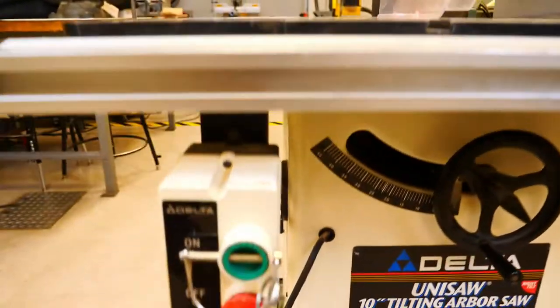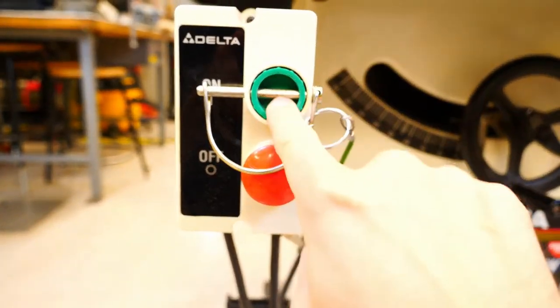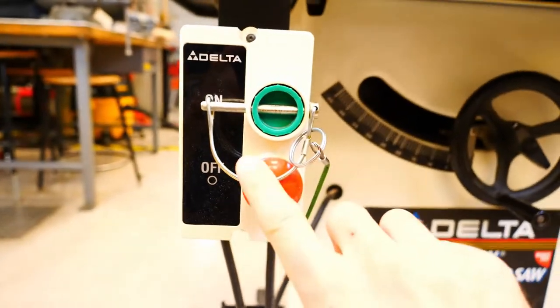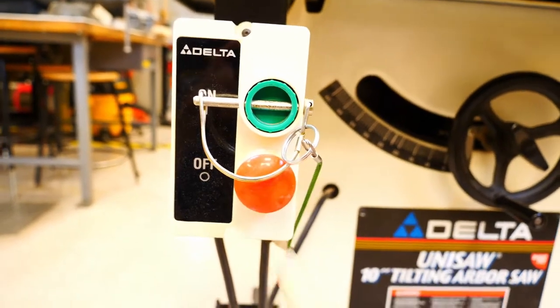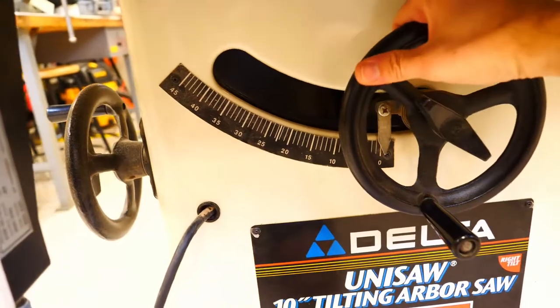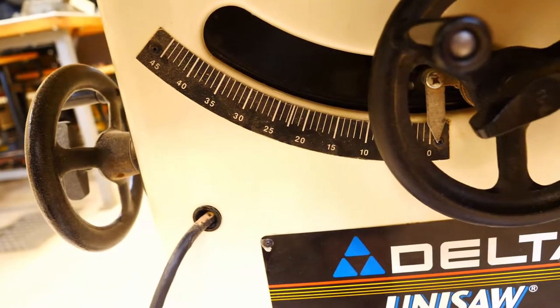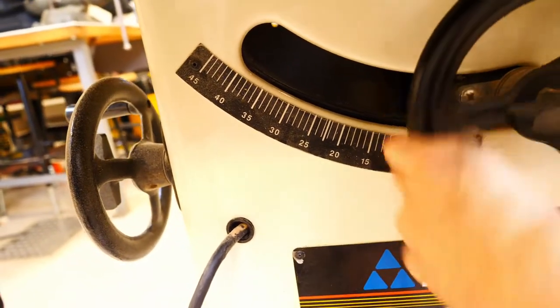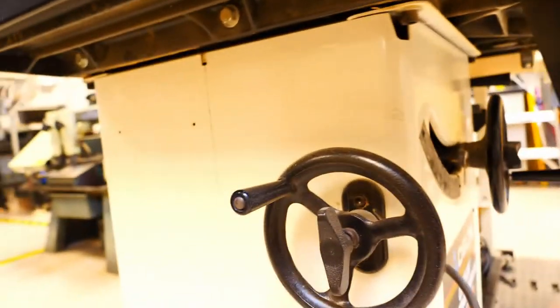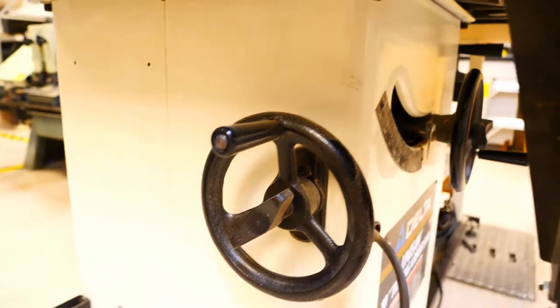Down below we have our on-off switch with our safety pin installed and our big red emergency off button right below it. Behind that we have our height adjustment wheel that controls the height of the blade when we're cutting and there's a scale there showing angle measurements. The other wheel on the side here controls the angle of the blade, so if you needed to make an angled cut we could assist you in doing so.